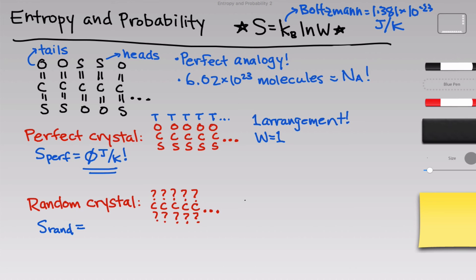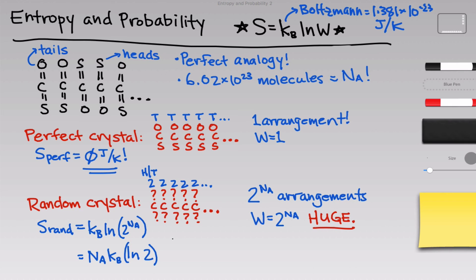The completely random state has a distribution of heads and tails that we don't know. The best guess we can give is that the number of possible arrangements that would generate the completely random state is two to the power of Avogadro's number, two because we have two possible states, heads or tails, and Avogadro's number as an exponent because there are Avogadro's number of molecules in this mole of COS that we're looking at. That's an astronomically huge value for W. Thankfully, the natural log allows us to take Avogadro's number out of the argument of the logarithm and kick it out front as a multiplying factor. When we do this to calculate the entropy, we get that S is equal to Boltzmann's constant times Avogadro's number times the natural log of two, and this turns out to be 5.76 joules per Kelvin.